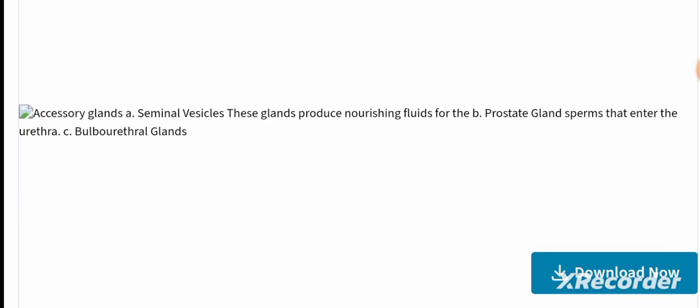Accessory glands include the seminal vesicles, which produce nourishing fluid for sperm, the prostate gland, which contributes fluid that enters the urethra, and the bulbourethral glands.